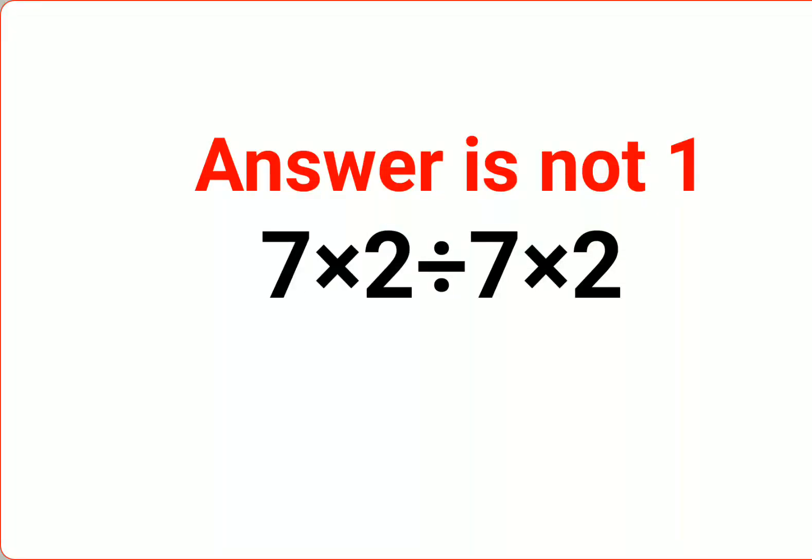Welcome everyone. Yes, a lot of people thought that the answer for this one is supposed to be one. Why like that? Because they did seven times two, that is fourteen. Here also they did seven times two, that is fourteen, and then they divided it and then they got the answer as one. That, my dear friends, is absolutely incorrect.